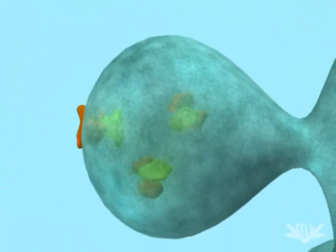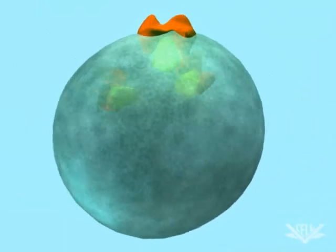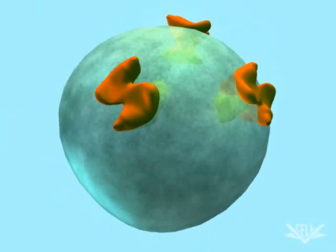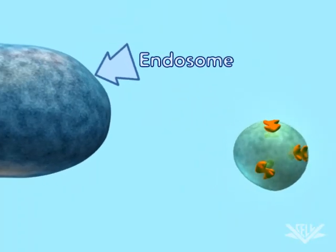Next, a vesicle containing the hydrolase buds off from the trans-Golgi and moves to the endosome. Endosomes eventually mature into lysosomes.